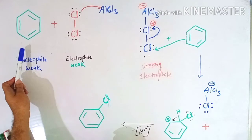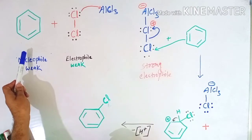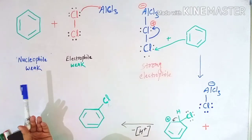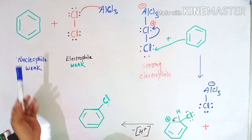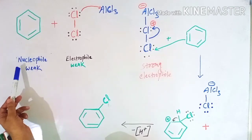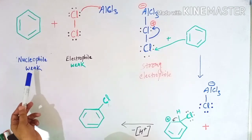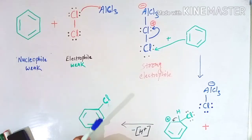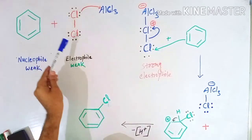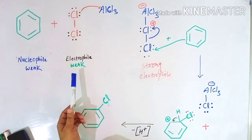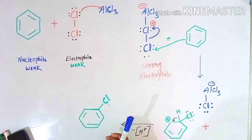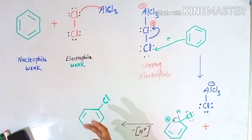Here is a benzene ring, and this benzene ring has delocalized pi electrons both above and below the plane, so it acts as a nucleophile — but its nature is weak; it's a weak nucleophile. And here is the molecular chlorine, which acts as a weak electrophile.